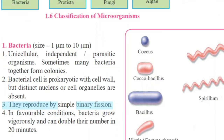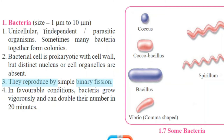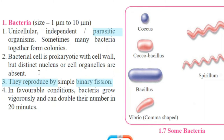Now, first is bacteria. Related to size, the size of bacteria is 1 micrometer to 10 micrometers. Characteristics: they are unicellular — there is one cell — and are independent or parasitic organisms. Parasitic means the organism lives in another organism and obtains nourishment from it. Second characteristic: the bacterial cell is prokaryotic with a cell wall, but a distinct nucleus and cell organelles are absent.